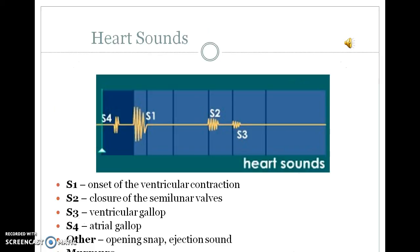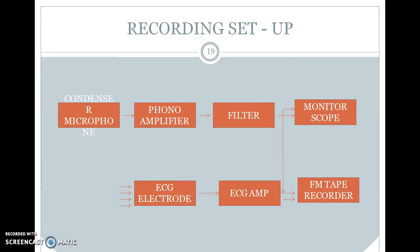The heart sound waveform shows S1 as ventricular contraction, S2 as closure of the semilunar valves, S3 as ventricular gallop, and S4 as atrial gallop. Other sounds include opening snap, ejection sound, and murmur sounds. In the recording setup, a microphone converts sound into electrical signals, which are amplified and filtered to remove unwanted signals, then displayed on a monitor scope. ECG electrodes measure electric signals fed to an ECG amplifier, and the output is sent to an FM tape recorder for monitoring and recording.